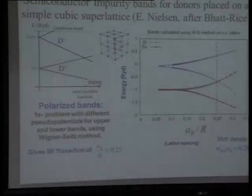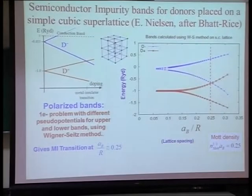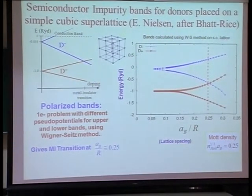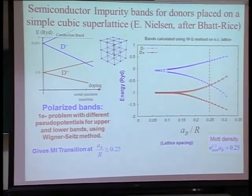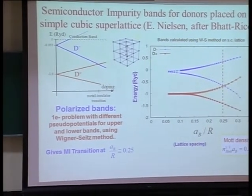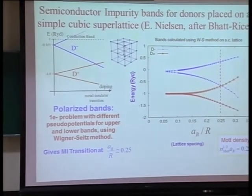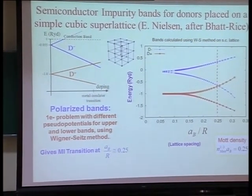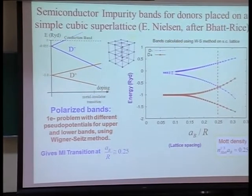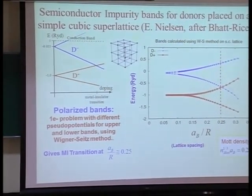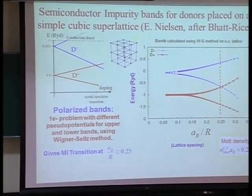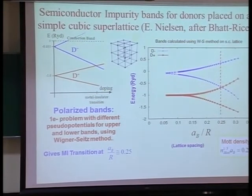That was the main reason for doing it, and then solving magnetic issues for the random system. But what Eric pointed out was that one can actually now consider what happens in the disordered case, because we have a parameterization of how the hopping integral for these random dopants varies with the distance between the dopants.